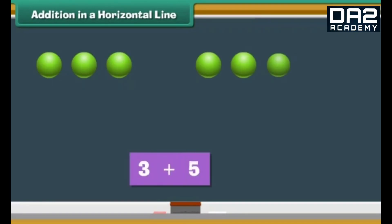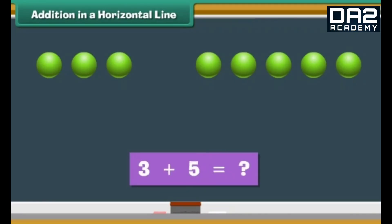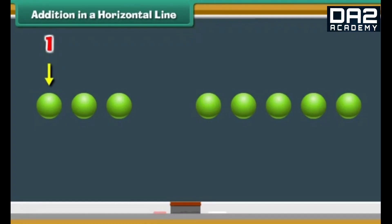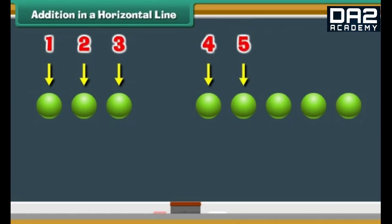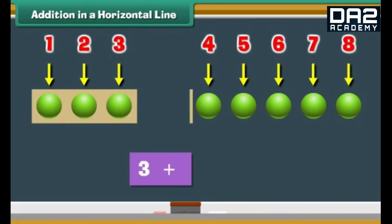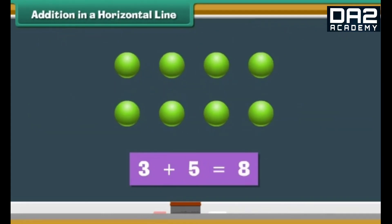What is three plus five? Count the dots: 1, 2, 3, 4, 5, 6, 7, 8. Three plus five is eight.